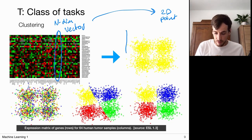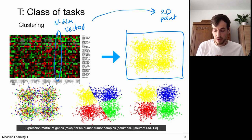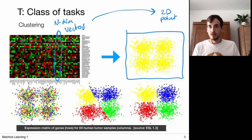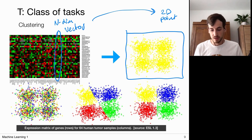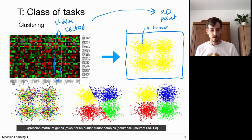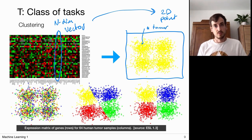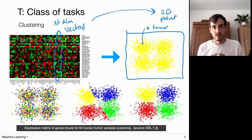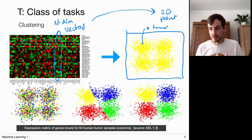We have a lot of tumors measured, we compute two summarizing coefficients for each, and we plot them. One point is one tumor. The task is to explore if there are patterns or if there are tumors that are related to each other, and we can do this via clustering.